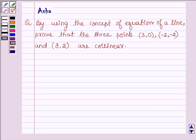of equation of a line, prove that the three points (3,0), (-2,-2) and (8,2) are collinear.